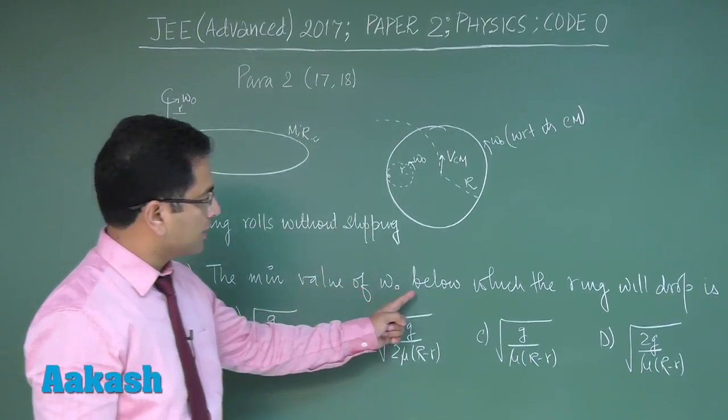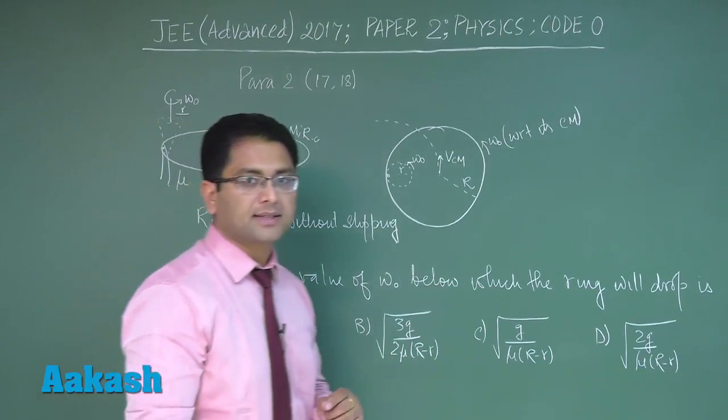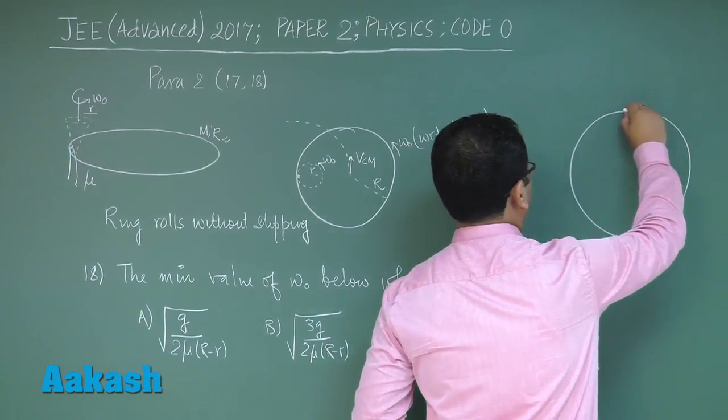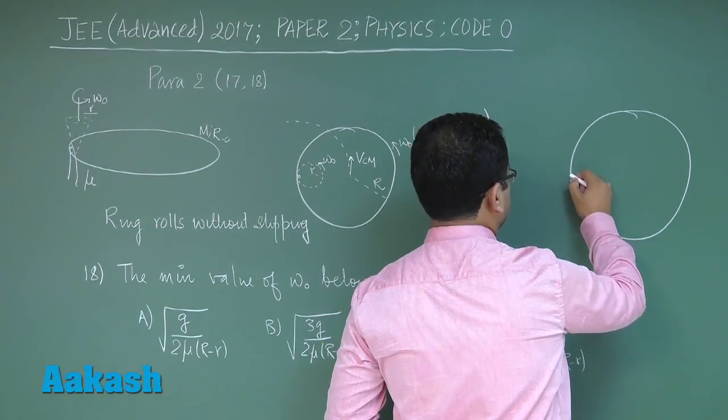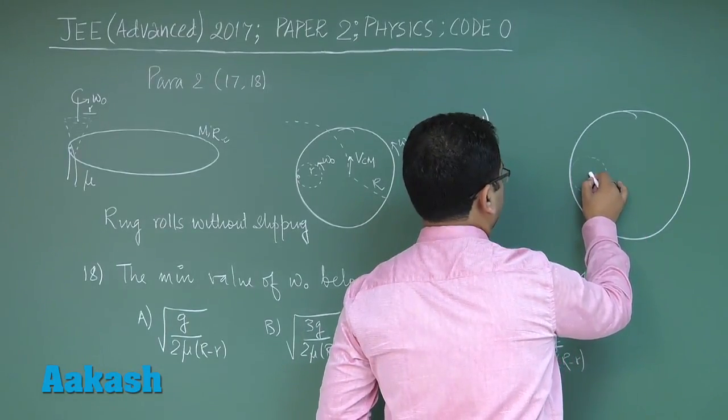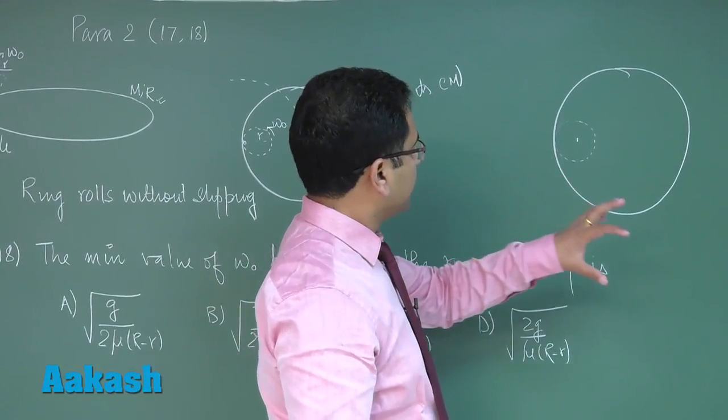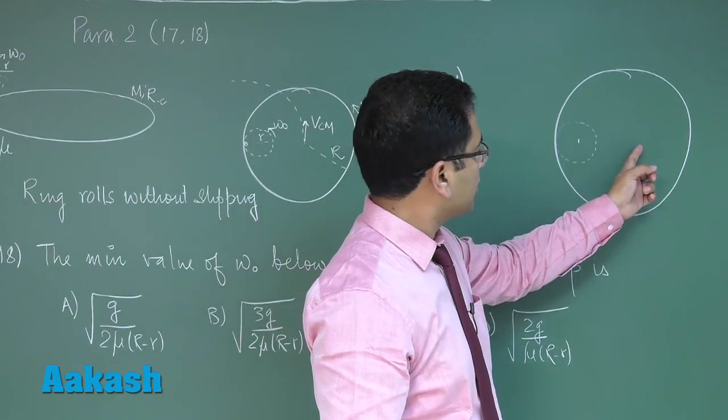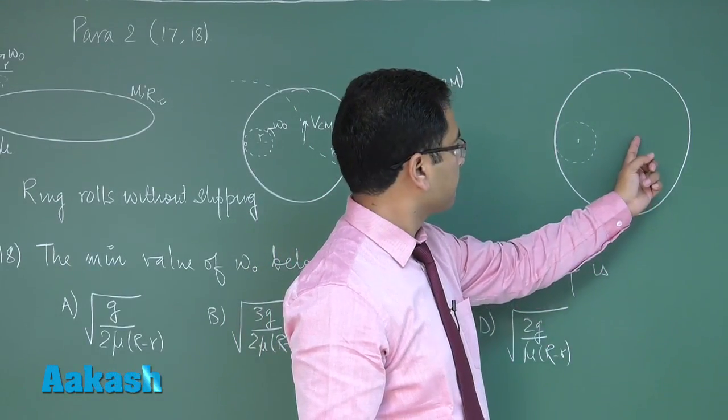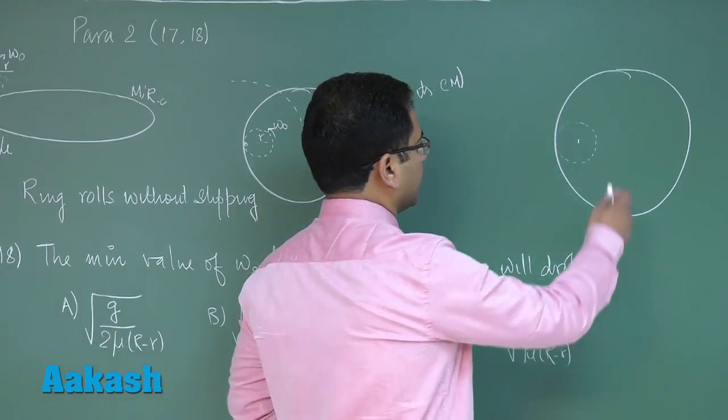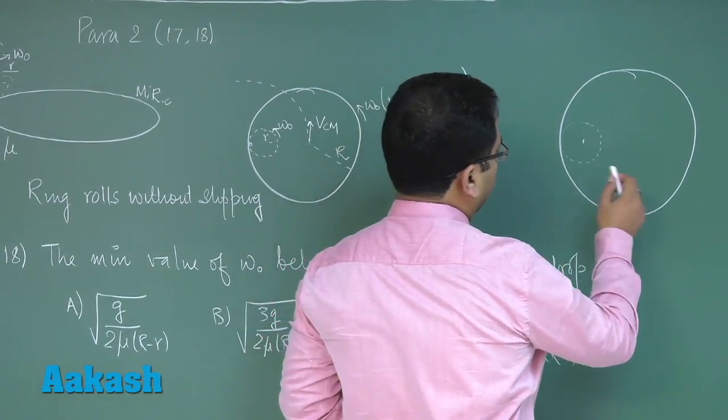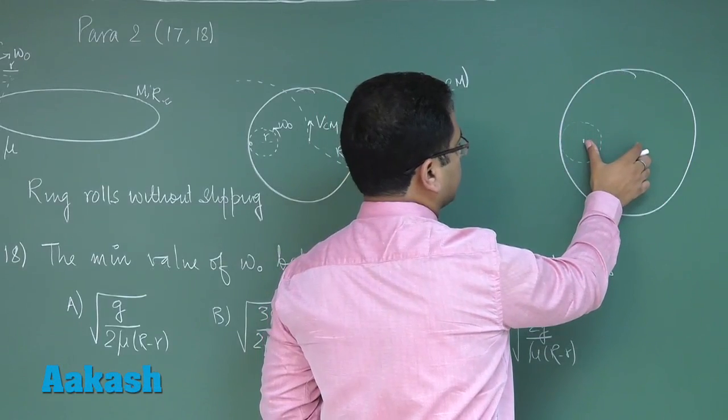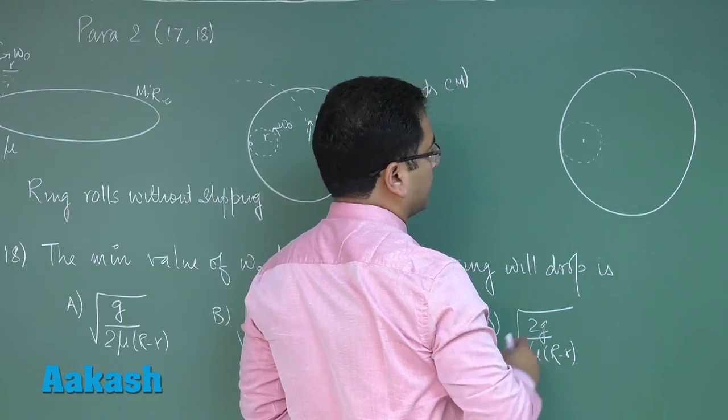All right, now question number 18 says the minimum value of omega naught below which the ring will drop. If we show the figure from the top view and here is the finger revolving, now you could see if we visualize the whole ring with respect to this particular axis, then you would see the center of mass of the ring would be revolving and in that situation the angular velocity would be omega naught. So what I can say is that the center of mass of the ring is moving in a circular motion with a radius of capital R minus small r.